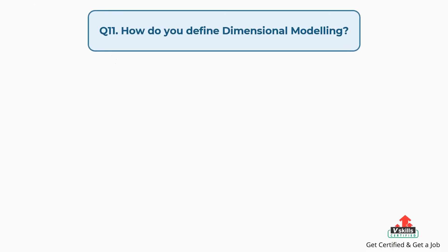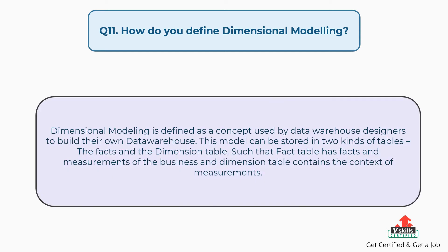Question number eleven: How do you define dimensional modeling? Dimensional modeling is defined as a concept used by data warehouse designers to build their own data warehouse. This model can be stored in two kinds of tables: the facts and the dimension table. The fact table has facts and measurements of the business, and the dimension table contains the context of measurements.